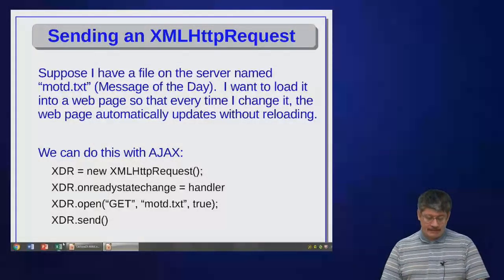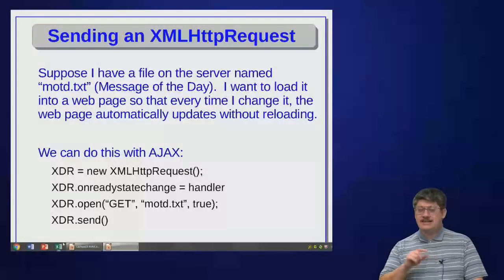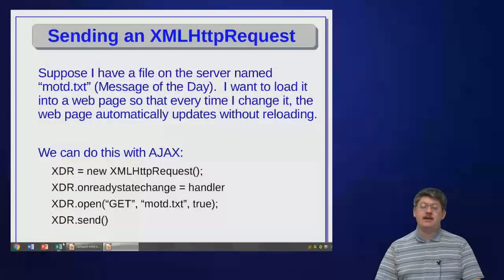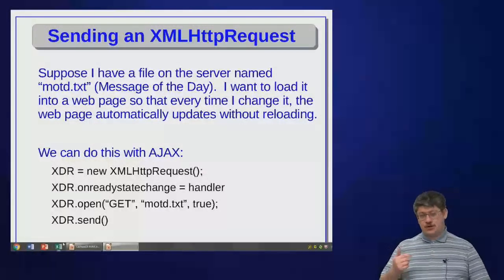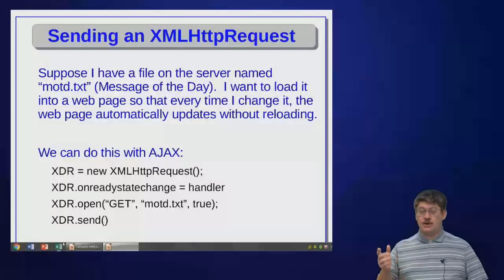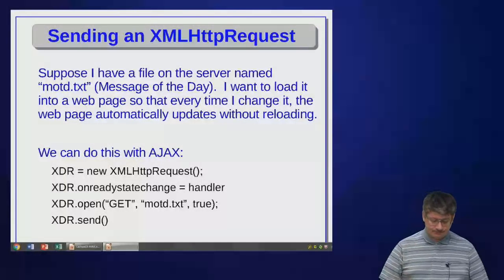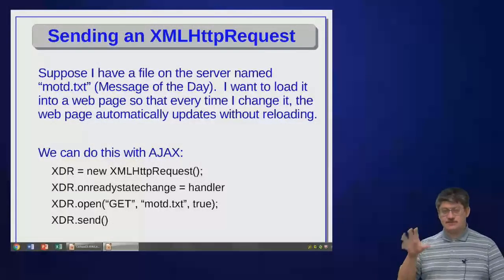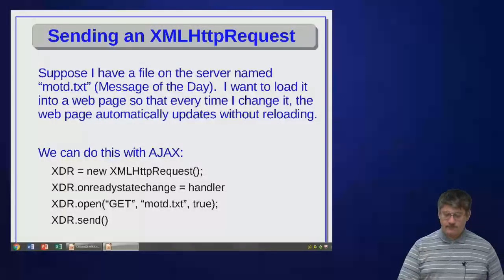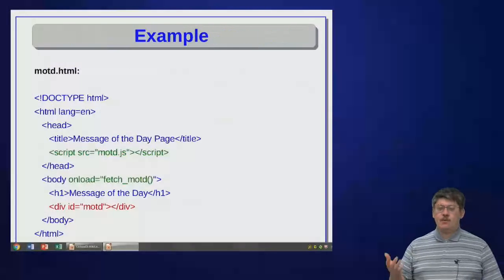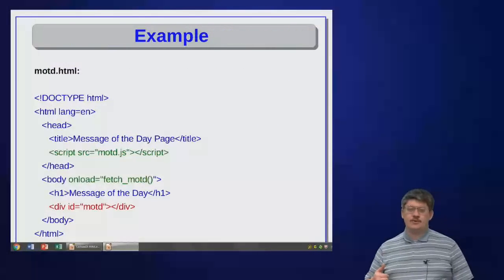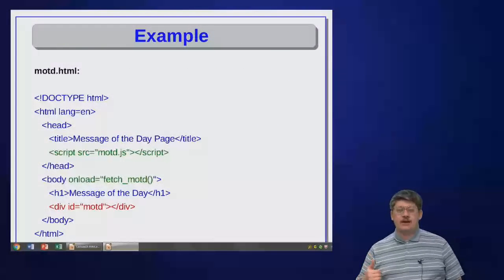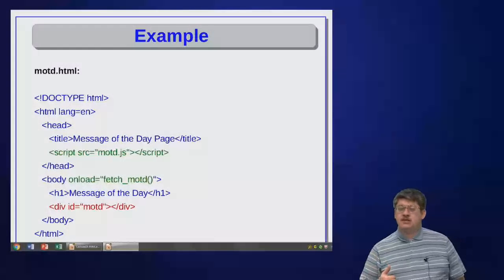Then I use the .open method of my XMLHttpRequest object to fetch motd.txt using an HTTP GET request, with true meaning error handling is enabled. Then I send the request. When sent, the XDR ReadyState property will change from 0 to 1. If I want to actually do anything with this, I'll need to write a little bit more code.